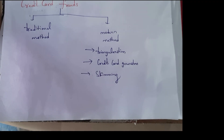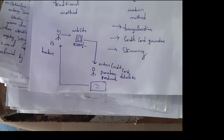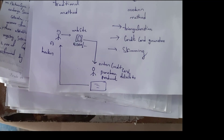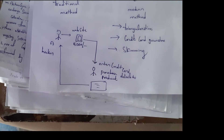In the triangulation method, the hacker creates a fake online shopping site and sends it to users. When users enter credit card details to purchase an item, all that information is transferred to the hacker. For example, user A is the hacker. He creates a fake webpage — an online shopping web page showing a mobile phone for 5,000 rupees. The user enters all credit card details to purchase the product, and those details are transferred to the hacker.